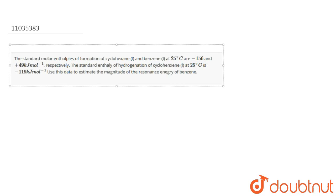In this question, the standard molar enthalpy of formation of cyclohexane and benzene at 25 degrees Celsius is minus 156 and plus 49 kilojoules per mole respectively. The standard enthalpy of hydrogenation of cyclohexene at 25 degrees Celsius, that is 298 Kelvin, is minus 119 kilojoules per mole. Using this data, we have to estimate the magnitude of the resonance energy of benzene.